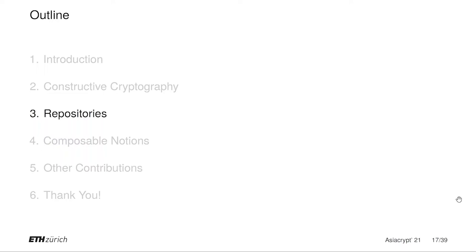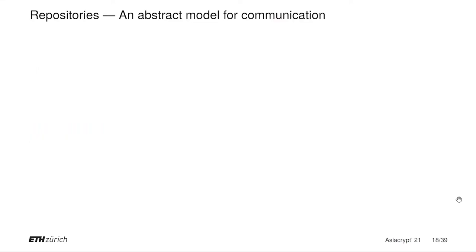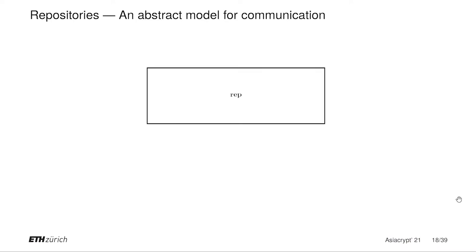Now we introduce repositories. Repositories are an abstract model for communication that we use in our paper. Essentially, a repository has a set of writers, readers, and copiers. Each writer can write into this repository, each reader can read, and each copier can issue copy operations. If we want to make these sets explicit in the notation for repositories, we simply add superscripts and subscripts.